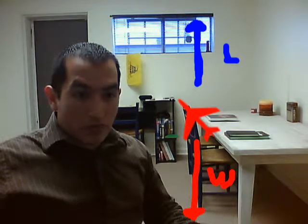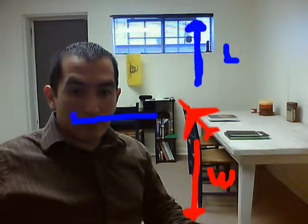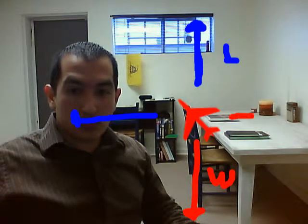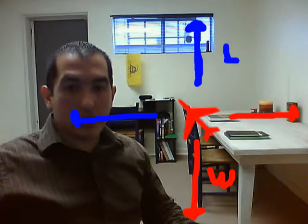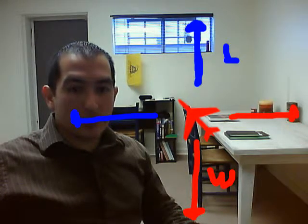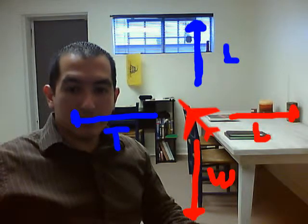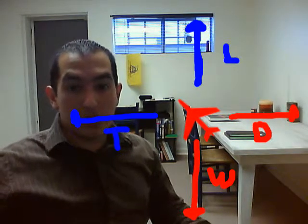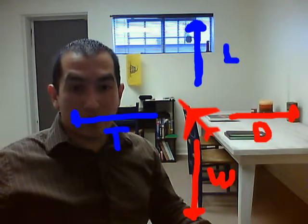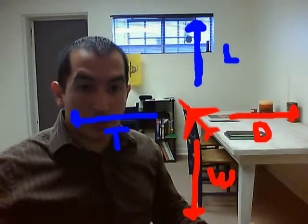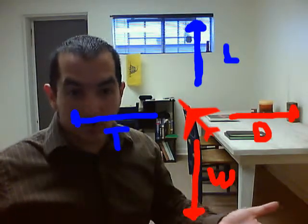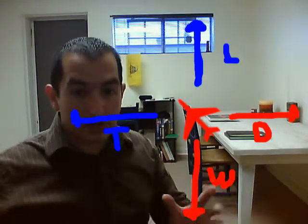So what you'll end up with is a little chart showing your thrust, your lift, your weight, and your drag. That concludes the video about the four forces of flight. This is a short introduction, and in part two we'll explain more about this.